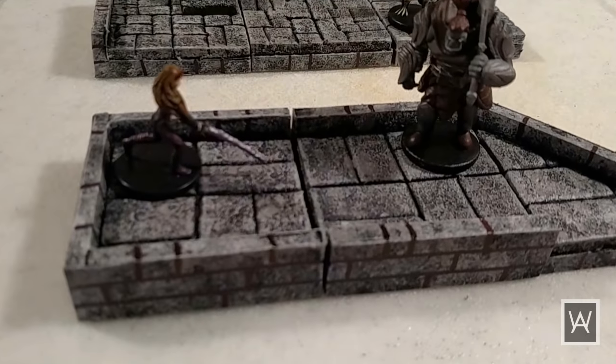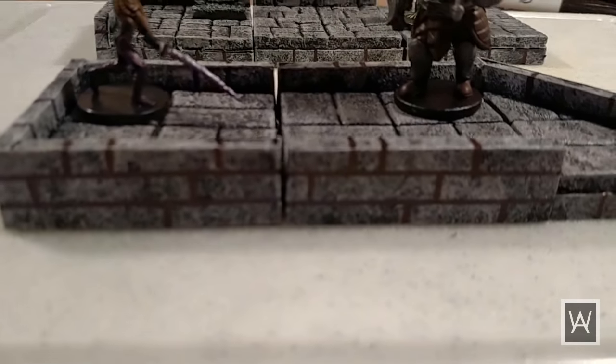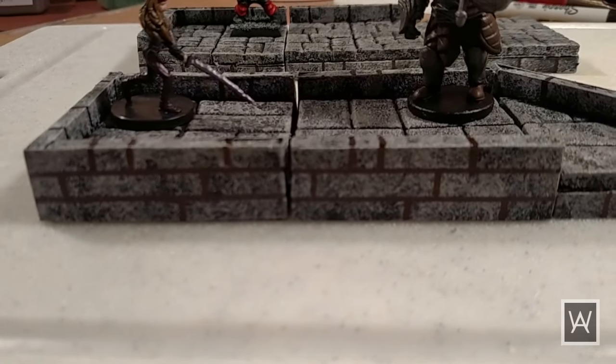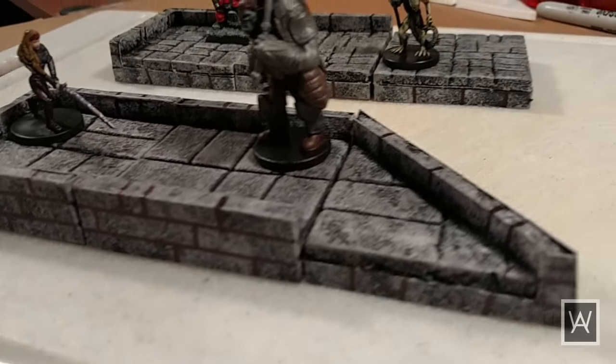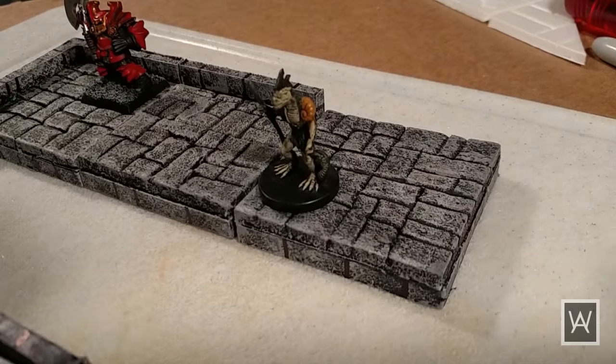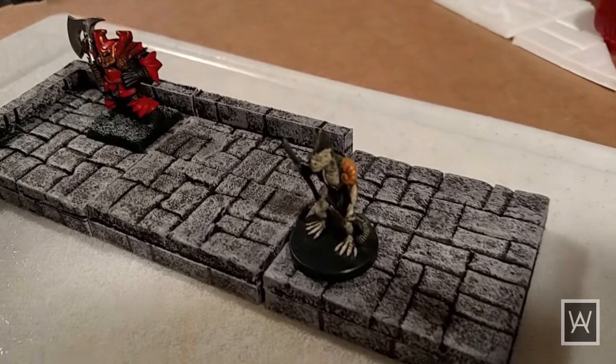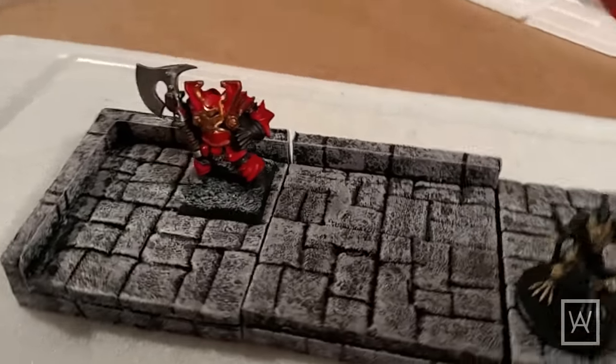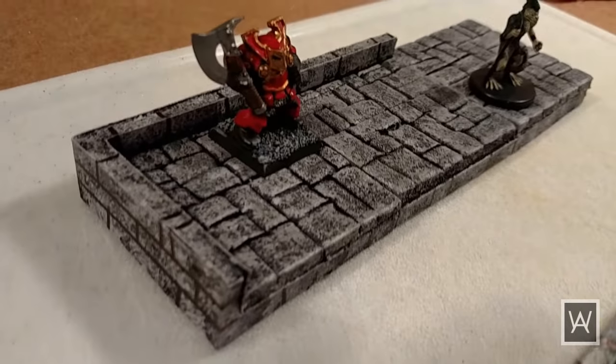And here's some in-play examples with some miniatures for scale. So you can see what I was talking about with the stippling versus sponging. You get a much finer speckle, which is sort of more like granite. And here's the other design style that we tried.